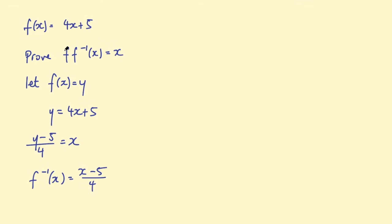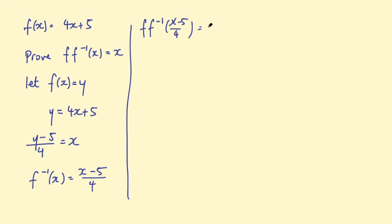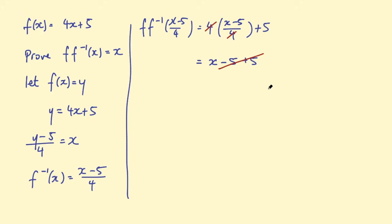Now we want f of f inverse, so we take f inverse and input it into the original function. So f of f inverse means the input is (x minus 5) over 4, giving us 4 times (x minus 5)/4 plus 5. The 4s cancel out, leaving x minus 5 plus 5. Minus 5 plus 5 equals 0, so we're left with just x. Therefore f of f inverse equals x — we've proven what was asked.